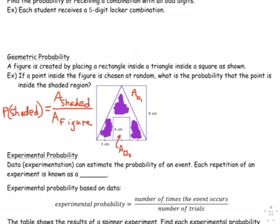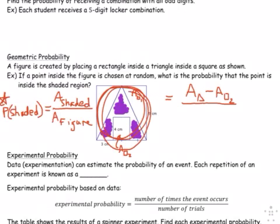For this problem in particular, we will use that formula for geometric probability and rewrite the probability of shaded is equal to the area of the triangle minus the area of the rectangle, all over the area of the figure, a sub square sub 1.